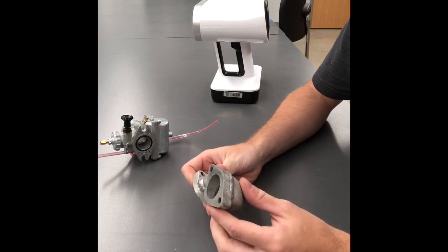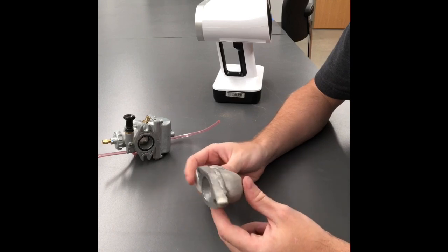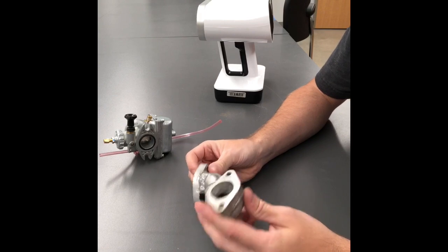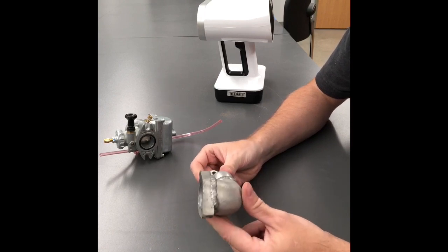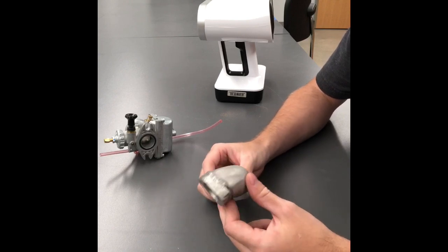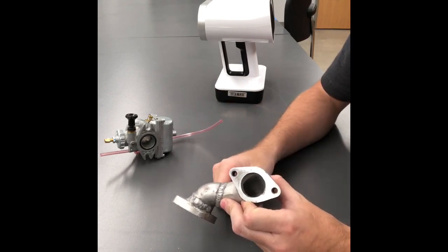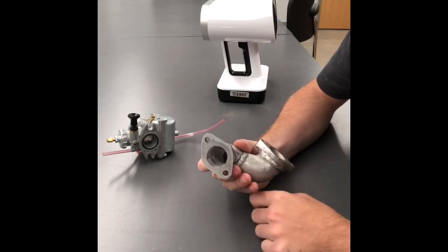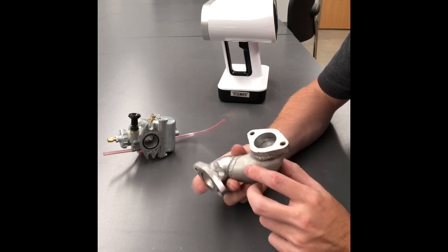The thing about scanning is you don't want to spend a whole bunch of time scanning the object because the longer you spend scanning it, the larger the file is going to be. And for most people, your computer is going to have a tough time handling it. So you don't really need to focus on the geometry that's not important for what you're doing. My main concerns are this top flange here that the carburetor actually mounts to and then this bottom one. So I'm concerned about this one here because this is where the intake manifold connects to the cylinder head. So that one's also important.